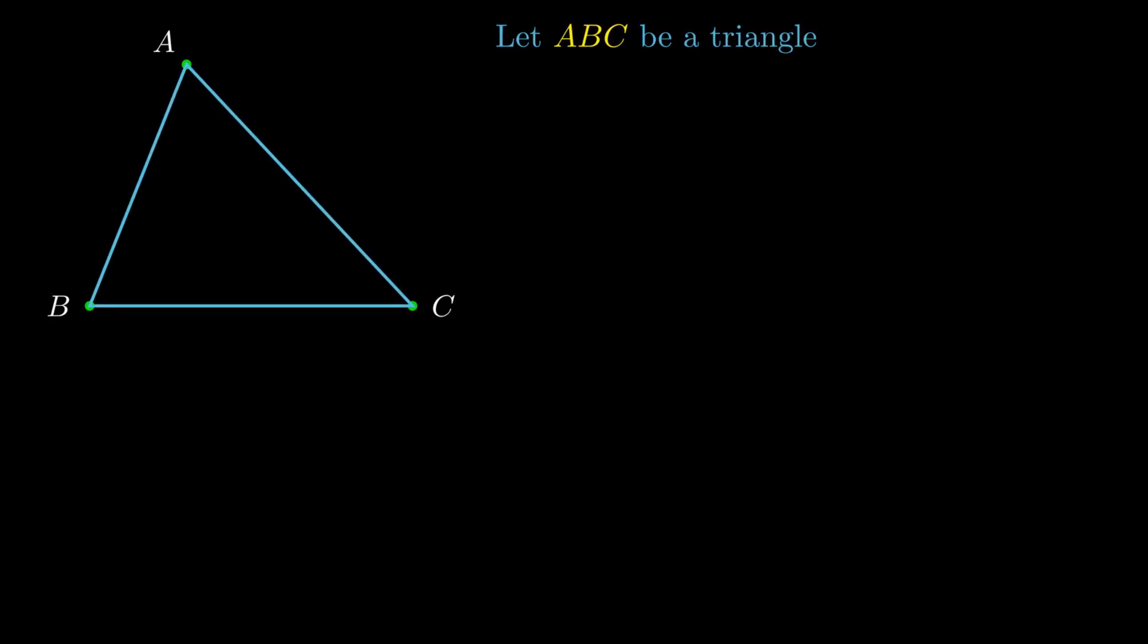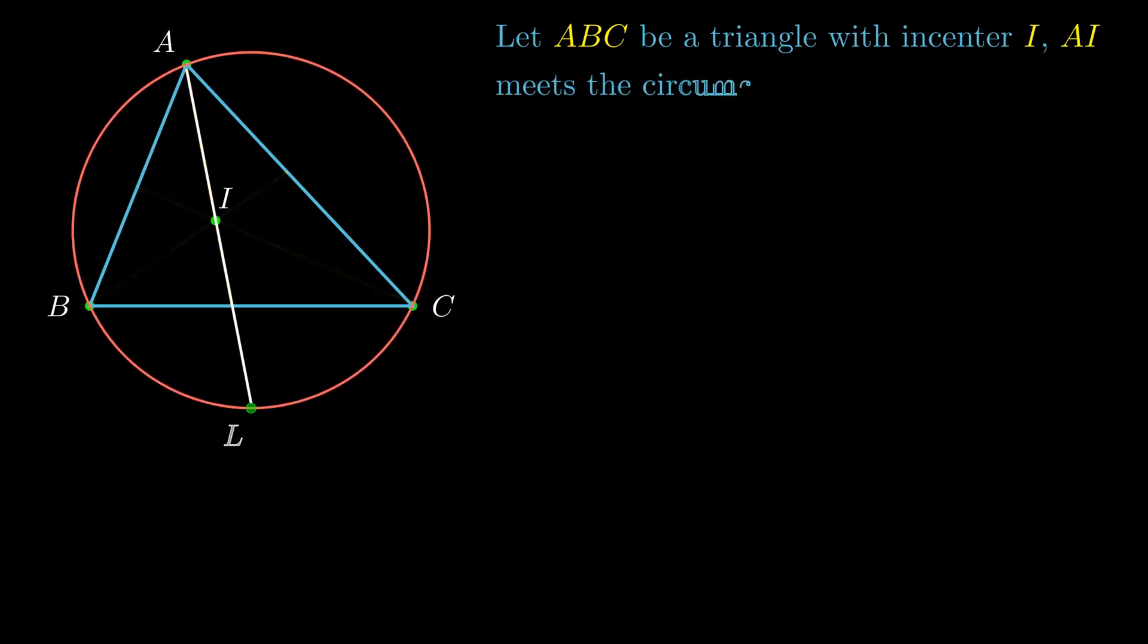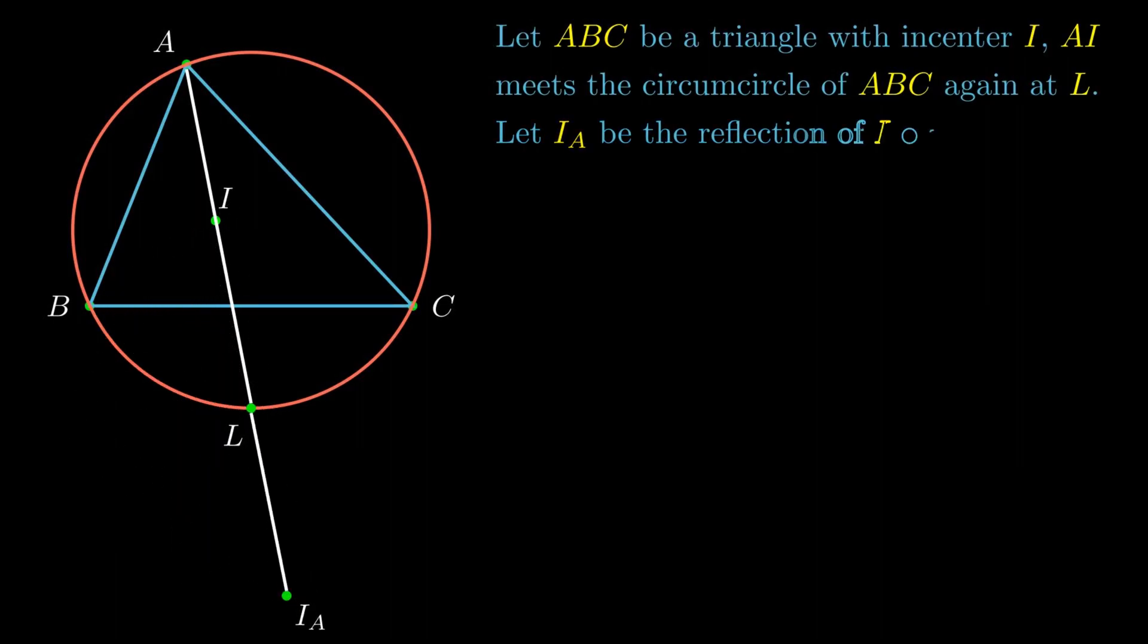Let ABC be a triangle with in-center I. The line AI meets the circumcircle of triangle ABC again at the point L. We let I sub A be the reflection of I over L.